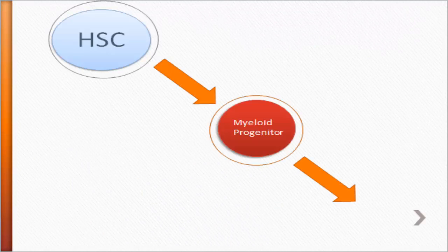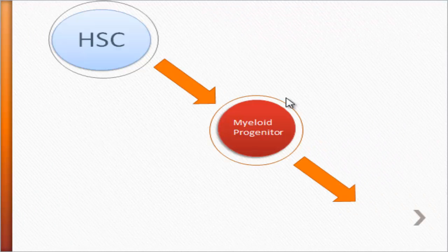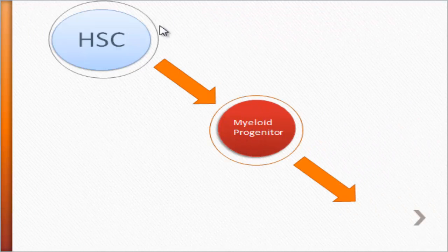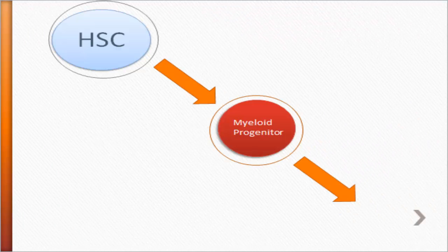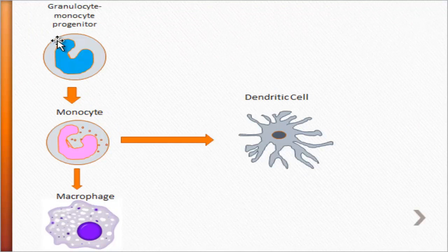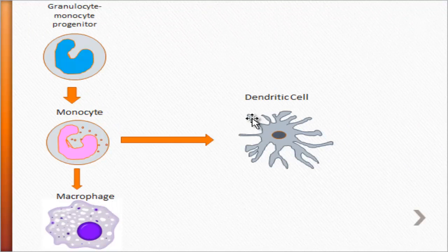Let's remind ourselves where the monocyte comes from. In the same way that all of our blood cells — from red blood cells to platelets to all of our immune cells, our T cells, B cells — they all come from our hematopoietic stem cell. Our hematopoietic stem cell differentiates into our myeloid progenitor, which then goes on to differentiate to give us our granulocyte monocyte progenitor. As the name states, this cell gives us our monocyte, which can either go on to give us our macrophages or our dendritic cells.